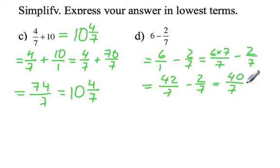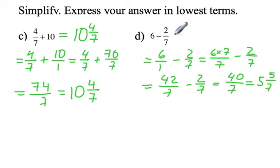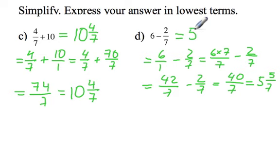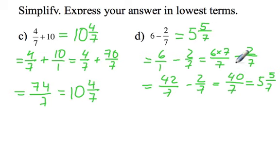7 fits into 40 five full times, and 5 times 7 is 35, so we have 5 left over. The final answer is 5 and 5 sevenths. The other way you could have thought is: if I have 6 of something and I'm taking away 2 sevenths, then I will have 5 left over still, and if I take 2 parts out of 7 away, there are 5 parts left — so 5 and 5 sevenths is the final answer.